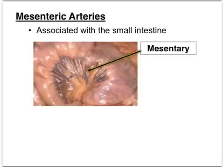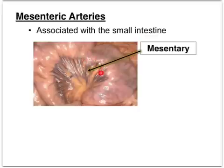Although the mesenteric arteries won't be directly tested on the unit test, they are worth mentioning because during the fetal pig dissection you'll see that the small intestines are held together by tissue called the mesentery. This inner part is the mesentery, and it holds the long small intestine together.